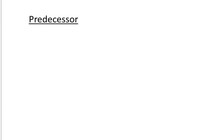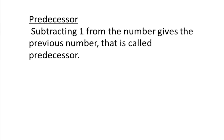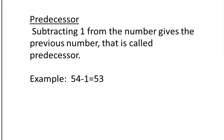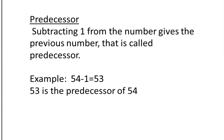What is a predecessor? When we subtract one from a number, the answer we get is called the predecessor. Subtracting one from a number gives the previous number — that is called the predecessor. For example, 54 minus 1 is 53, so 53 is the predecessor of 54. In simple words, it is called the 'before number.'